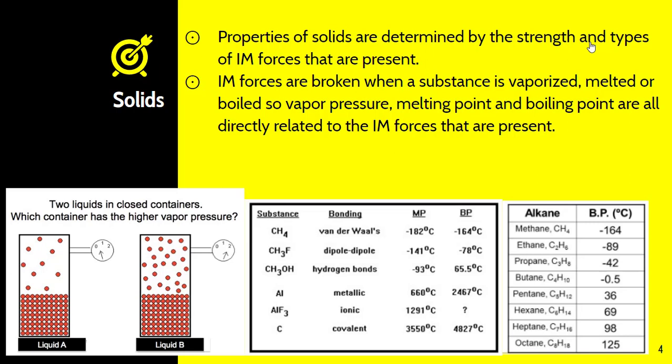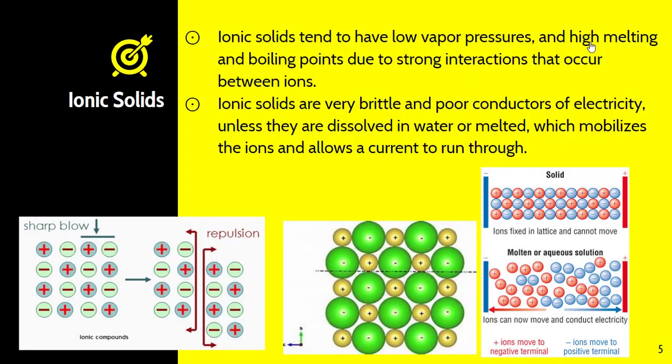As a result, higher intermolecular forces means higher boiling point and higher melting point. For vapor pressure, though, remember it's the opposite. Lower intermolecular forces have higher vapor pressure. The reason is that those molecules become a vapor much easier. The easier it becomes a vapor, the more pressure that vapor would have inside a rigid container. So vapor pressure is indirectly related to intermolecular forces. The stronger the forces, the weaker the vapor pressure. The weaker the forces, the stronger the vapor pressure.